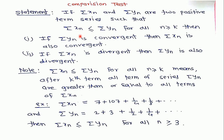This means if series yn is convergent then series xn is also convergent, and if xn is divergent then series yn is also divergent. This happens because in a positive term series, a series is convergent if its sequence of partial sums is bounded. If the sequence of partial sums of yn is bounded, then the sequence of partial sums of xn is also bounded, since xn is smaller than yn. If xn is divergent, its partial sums are unbounded, which implies the partial sums of yn are also unbounded. Therefore, divergence of xn implies divergence of yn, and convergence of yn implies convergence of xn.